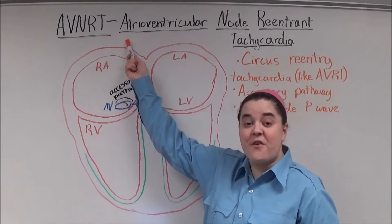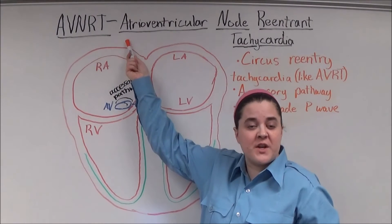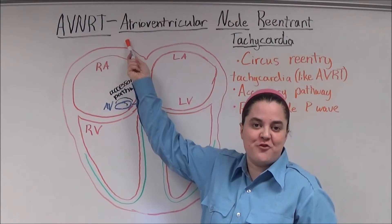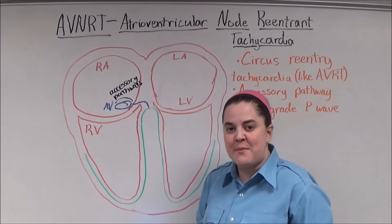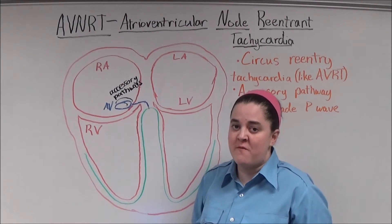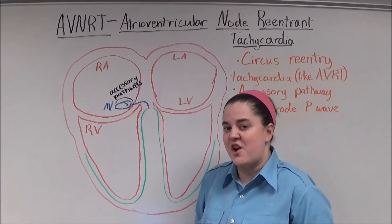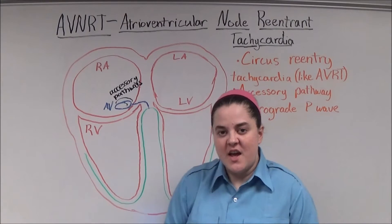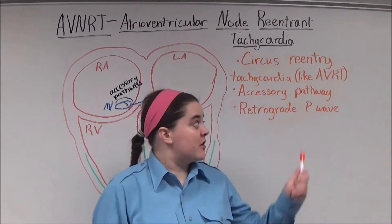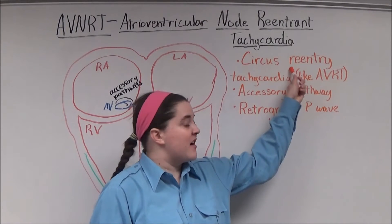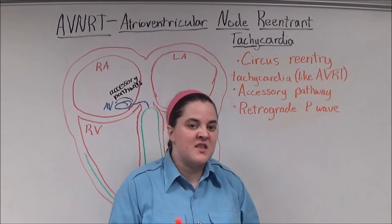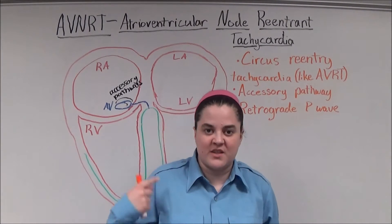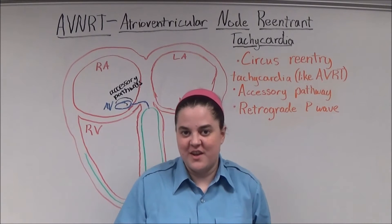AVNERT stands for atrioventricular node reentrant tachycardia and it's the most common type of supraventricular tachycardia. It's also a circus reentry tachycardia, just like AVRT, which means that the impulse goes in a circle.